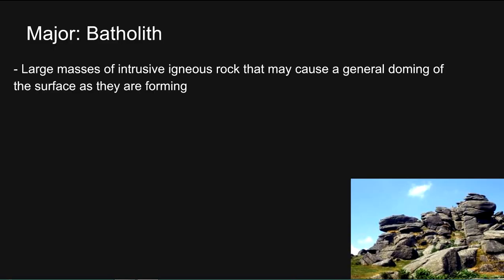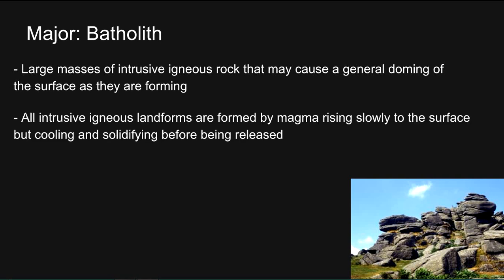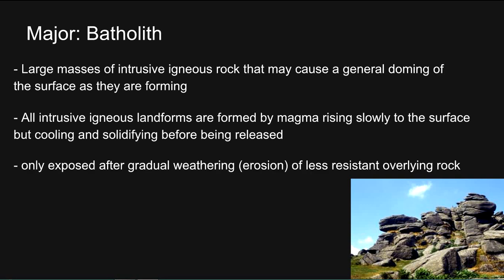Intrusive igneous landforms. Batholith: large masses of intrusive igneous rock that may cause a general doming of the surface as they are forming. All intrusive igneous landforms are formed by magma rising slowly to the surface, but cooling and solidifying before being released. Only exposed after gradual weathering or erosion of less resistant overlying rock. Comprised of resistant rocks such as granite and gabbro. An example is Dartmoor in Cornwall, which forms part of a large batholith that extends under Cornwall and beyond.